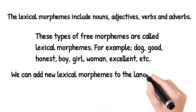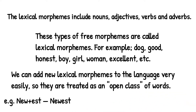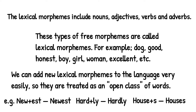We can add new lexical morphemes to the language very easily, so they are treated as an open class of words. For example, new plus the suffix -est becomes newest; hard plus the suffix -ly becomes hardly; house plus the suffix -s becomes houses. We can create a lot of words by adding bound morphemes to free morphemes. When free morphemes combine with bound morphemes, the free morphemes form an open class — like nouns, adjectives, verbs, and adverbs.